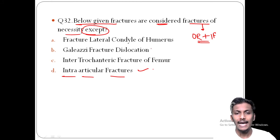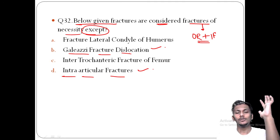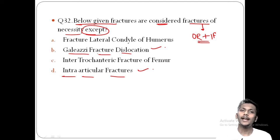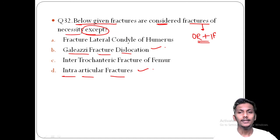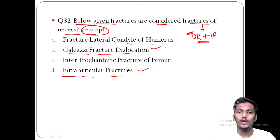Option B — Galeazzi and Monteggia fracture-dislocation — involves the forearm bones (ulna and radius) and is associated with radio-ulnar joint dislocation, which cannot be treated conservatively by closed reduction. These must be treated with open reduction and internal fixation. Therefore, Galeazzi and Monteggia fracture-dislocations are also fractures of necessity.